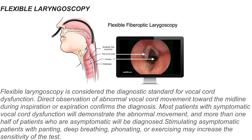Flexible laryngoscopy is considered the diagnostic standard for vocal cord dysfunction. Direct observation of abnormal vocal cord movement towards the midline during inspiration or expiration confirms the diagnosis. Most patients with symptomatic vocal cord dysfunction will demonstrate the abnormal movement, and more than one-half of patients who are asymptomatic will also be diagnosed. Stimulating asymptomatic patients with panting, deep breathing, phonating, or exercising may increase the sensitivity of the test.